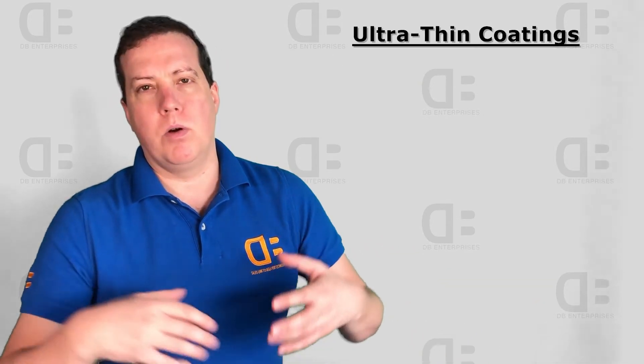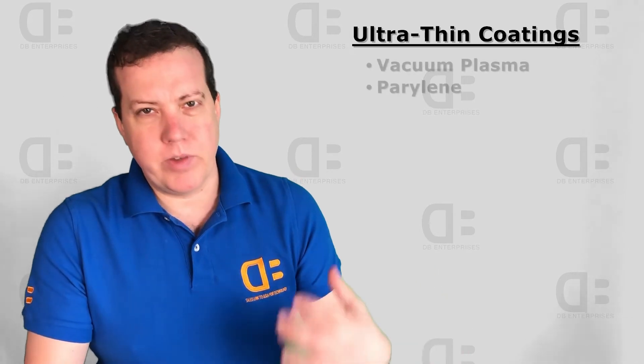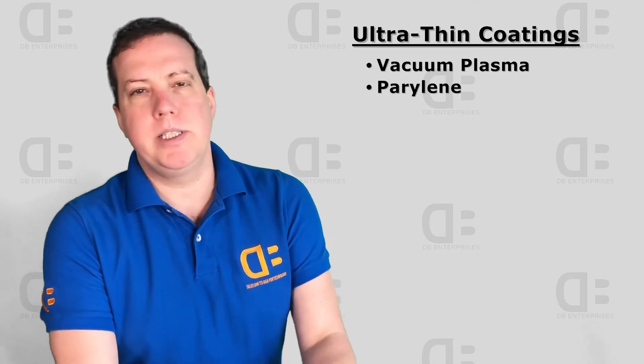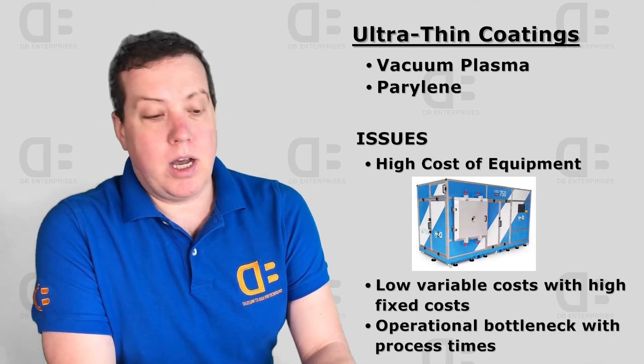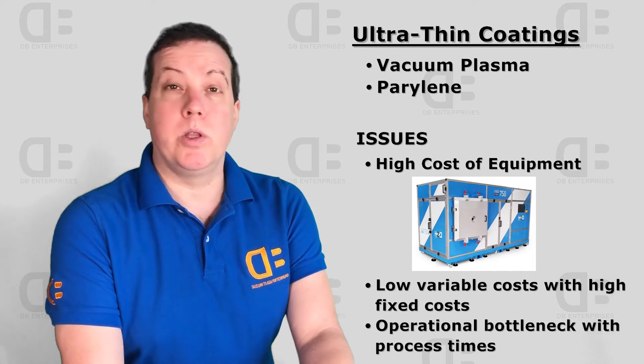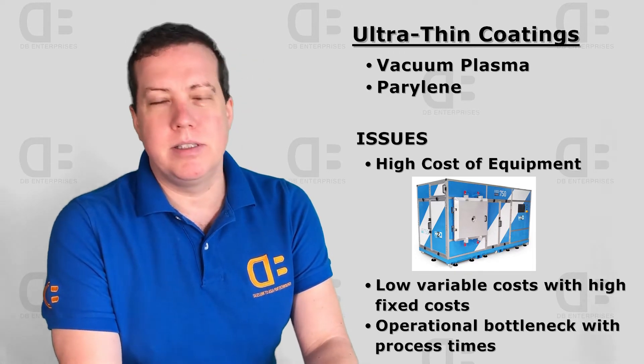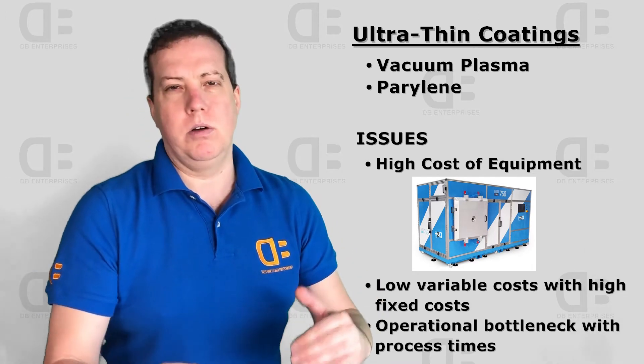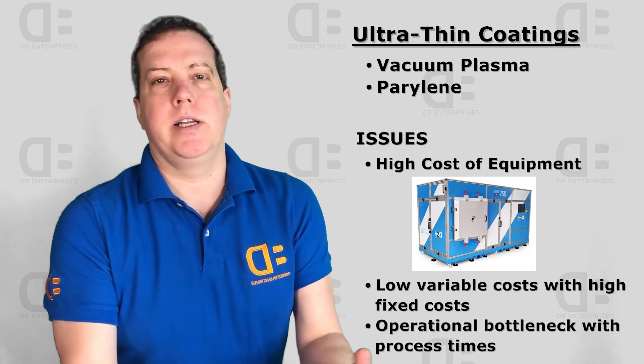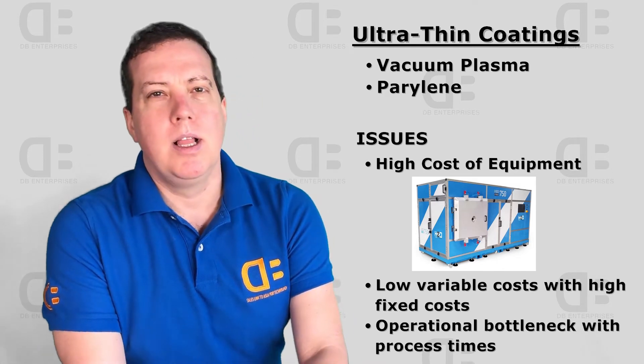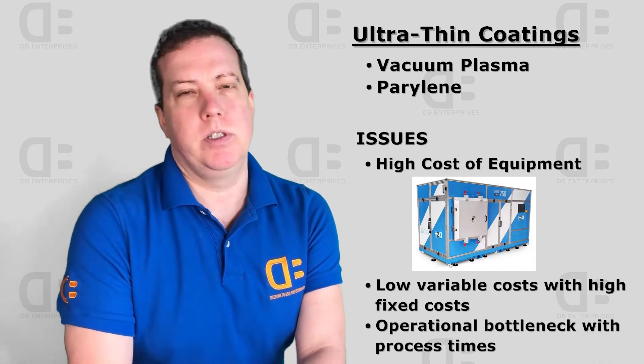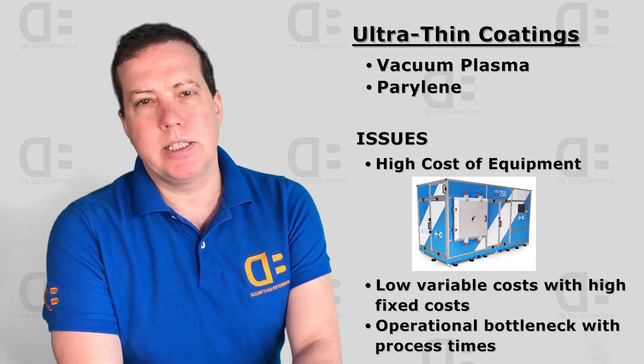Next section would be what we call ultra thin coatings. There's plasma vapor deposition and also perylene in this category. The problem with this category is there's a high cost to entry. These machines are somewhere between three to five hundred thousand dollars for a machine and then you buy the chemistry. So while the variable costs are low, the fixed cost of that capital expense is quite high. Unless you're a major brand shipping millions of units a year, you're never going to get into this game.